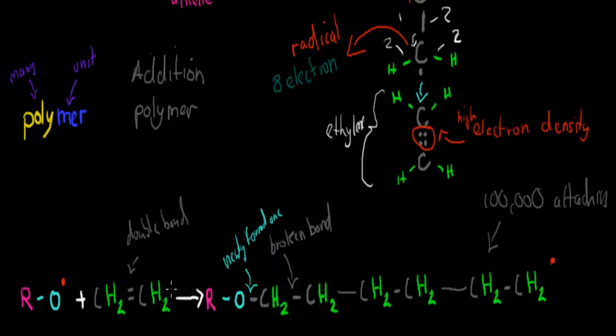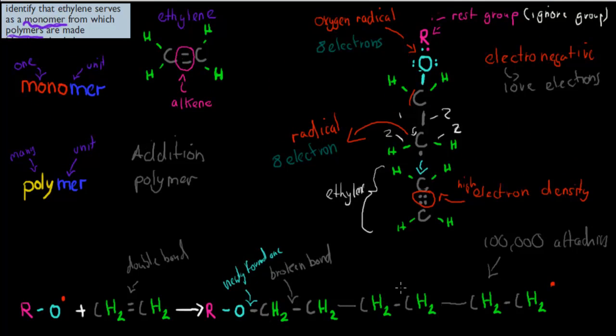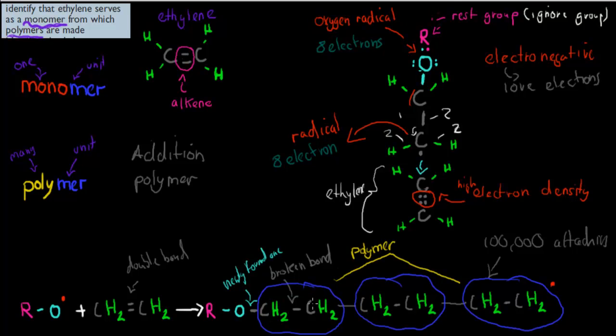So ethylene serves as a monomer. Each of these parts here, each of these parts was a monomer before they got attached. So monomer here, monomer here, monomer here. Now that they're all attached, now that they're all bonded together, they're called a polymer. So ethylene serves as a monomer to make a polymer. And the polymer, in this case, will be called polyethylene.